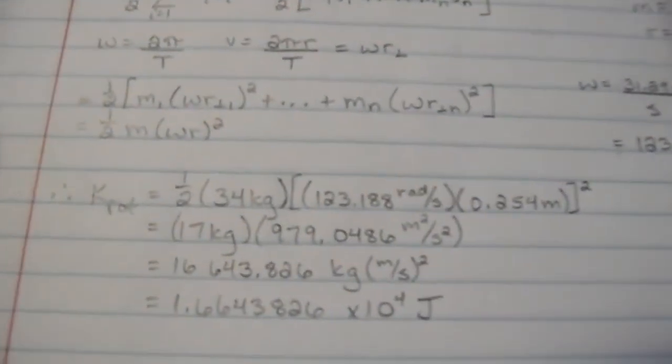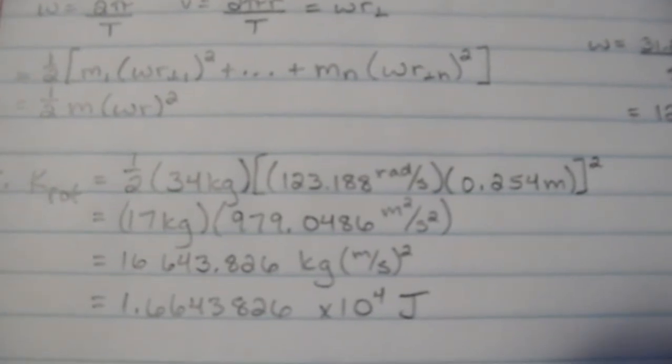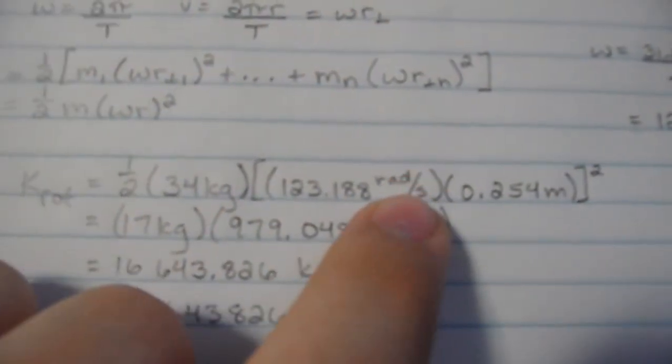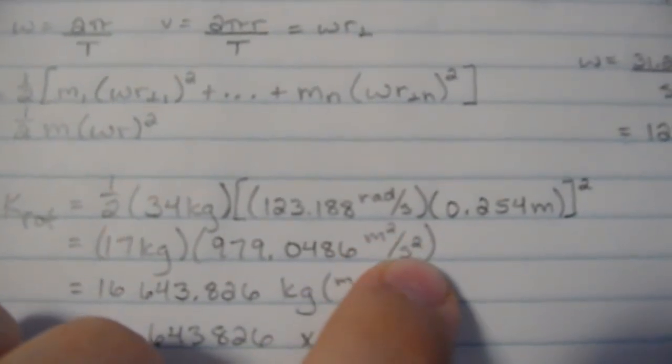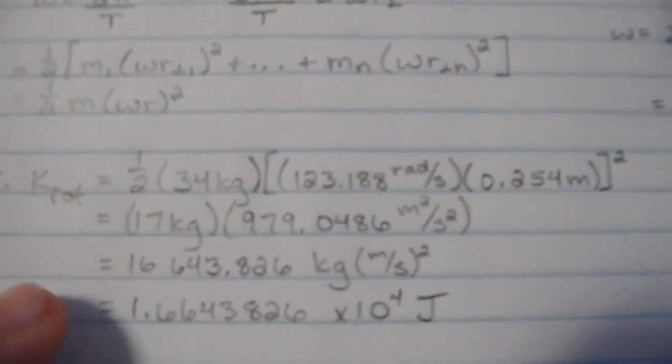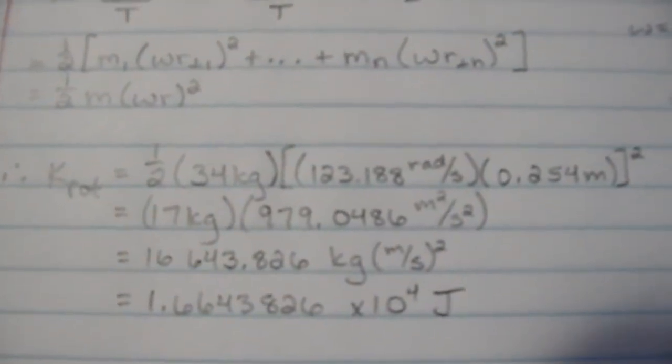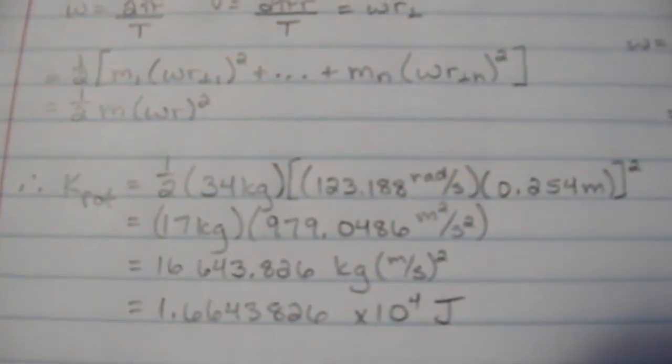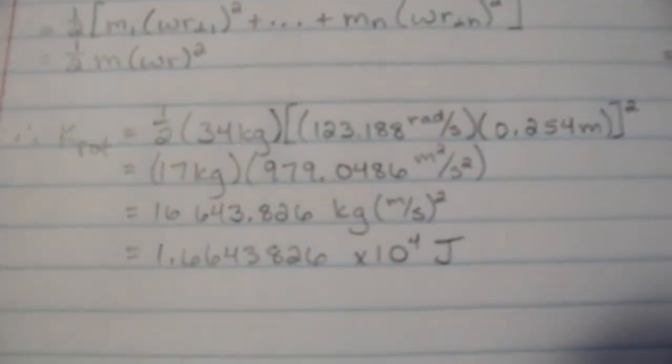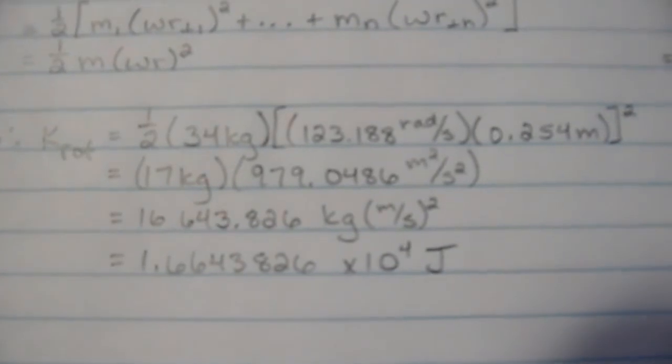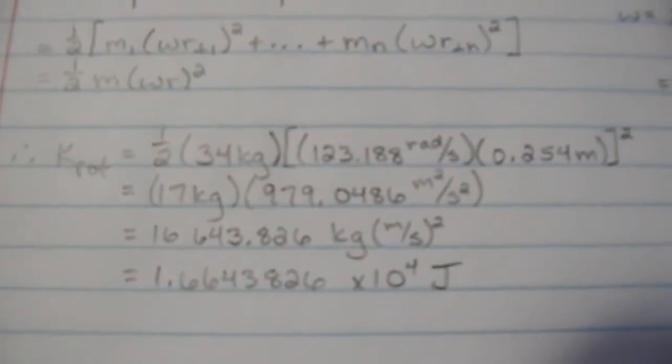All right, now to plug everything in. Multiplying out through everything, the radians kind of go away, and we get meters squared over seconds squared, and the numbers come out to 16,643.826 kilogram meters squared over seconds squared, or in other words, 1.6643826 times 10 to the 4th joules, which is the unit for energy.